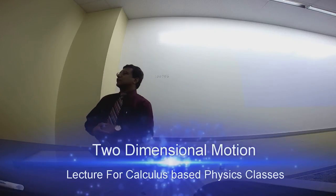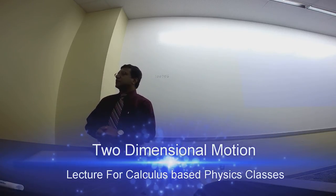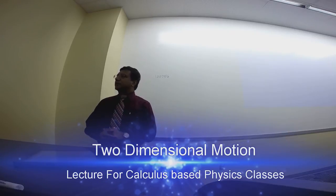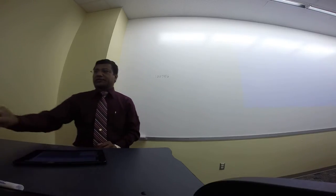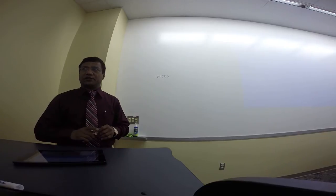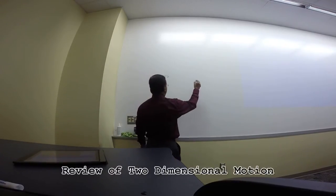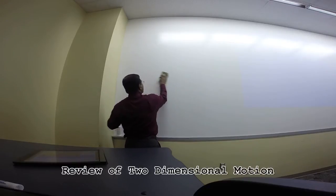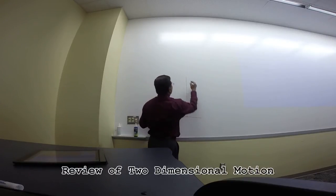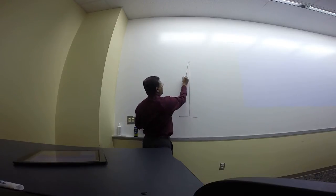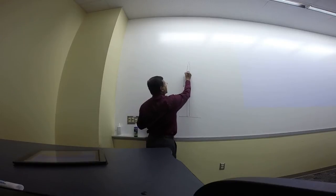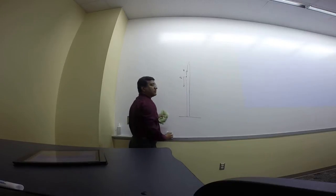Two objects are thrown from the top of a building: one is thrown up and the other is thrown down, both with the same initial speed. What are their speeds when they hit the street? You have a building; one object is thrown straight up, the other straight down, both given the same initial speed.